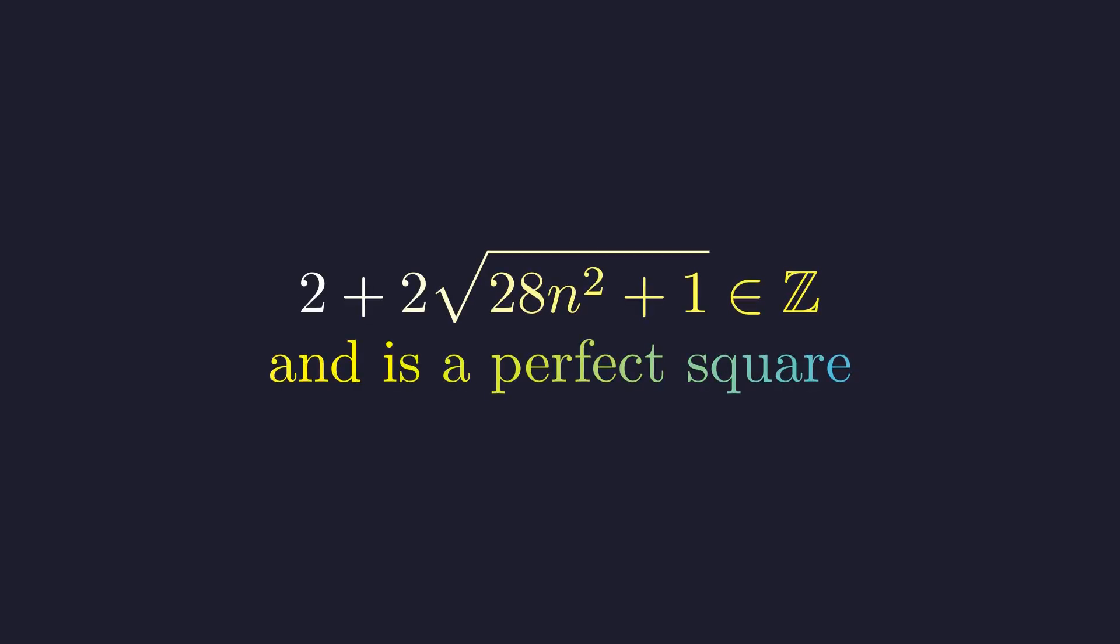The problem gives an expression in terms of a positive integer n and establishes a condition that the expression evaluates to an integer. Our task is to prove that if this condition holds, the integer result must be a perfect square.